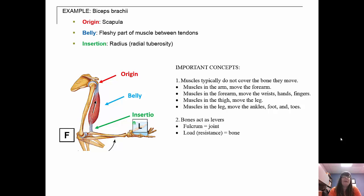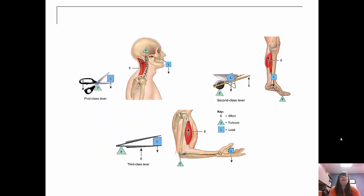Bones act as levers. Levers have three parts: a fulcrum, a load, and effort. The fulcrum equals our joint; the load, or resistance, is our bones; and the effort — the work being done — is by the muscles. We have three classes of levers. First-class levers are like a pair of scissors: the effort is at the scissor end, the fulcrum is the middle, and the load is whatever you're trying to cut. Second-class levers are like a wheelbarrow: the fulcrum is the wheel, the load is inside the barrel, and the effort is lifting it up. Third-class levers are like tweezers: the fulcrum is at the end, the effort is in the middle, and the load is whatever you're trying to pick up.